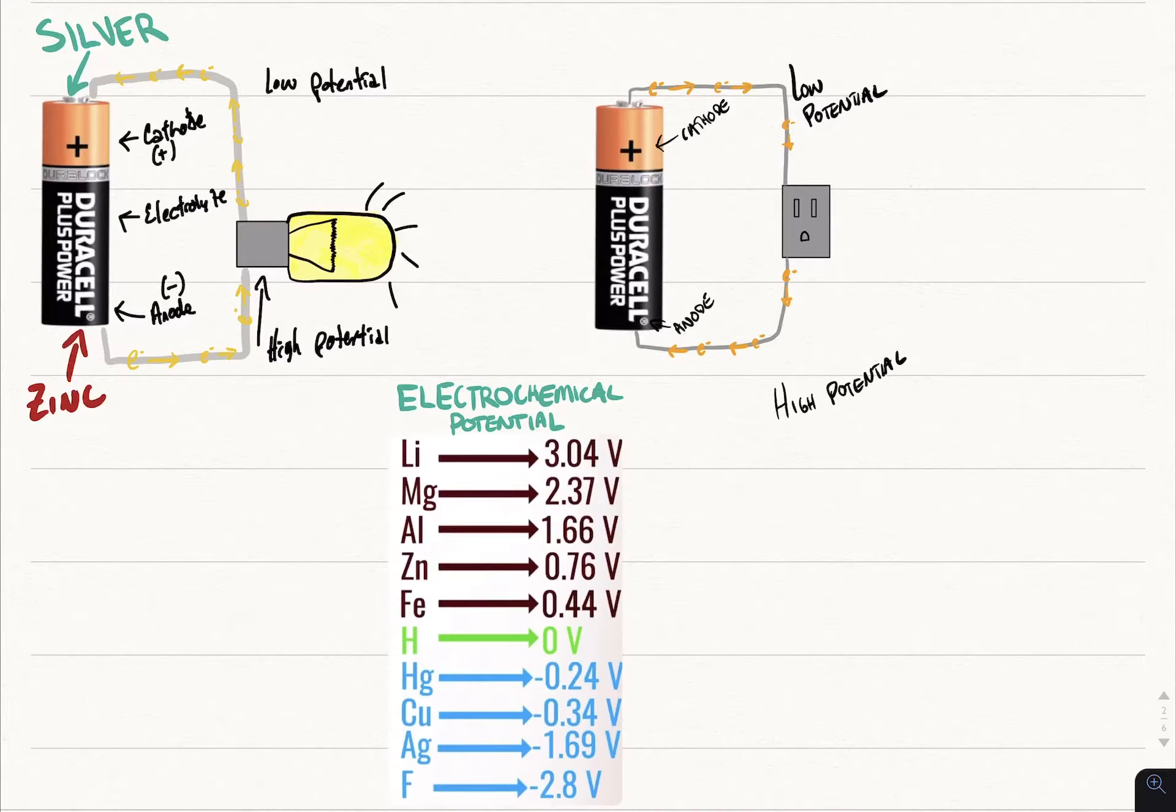So different batteries are made from different elements. For example, this one here we see it has zinc and silver. Down here in the electrochemical potential chart we have zinc and silver. The difference between those two is 2.45 volts, so that's how much voltage is transferred across this potential.